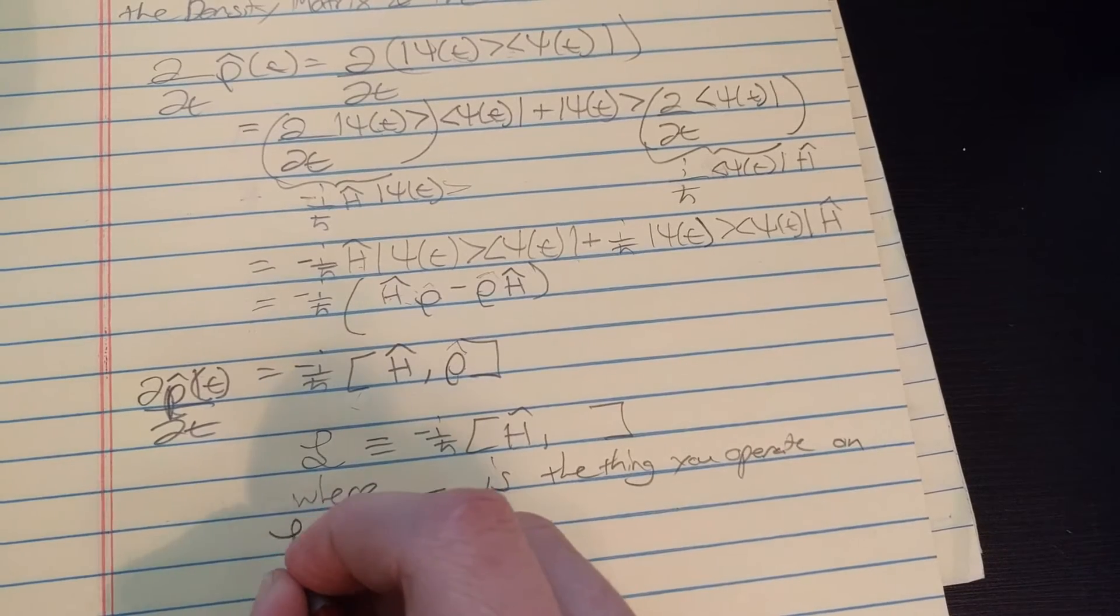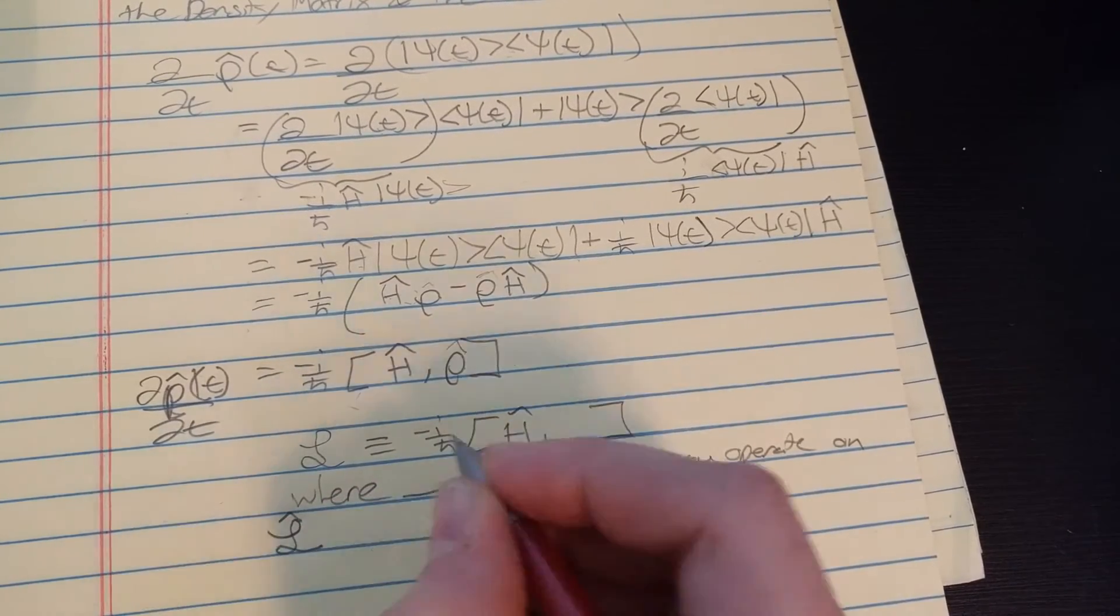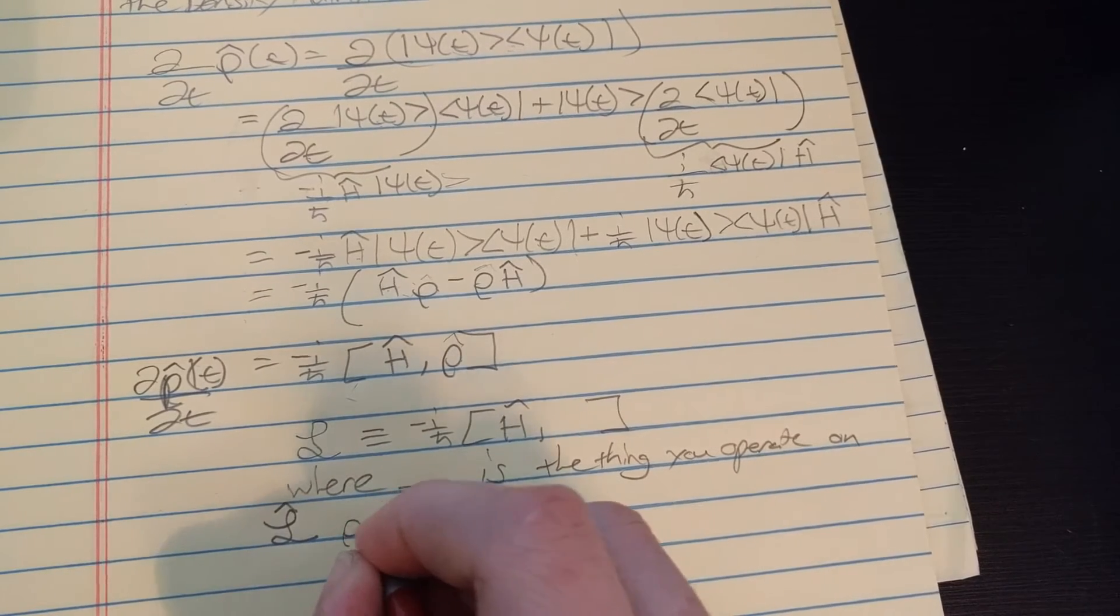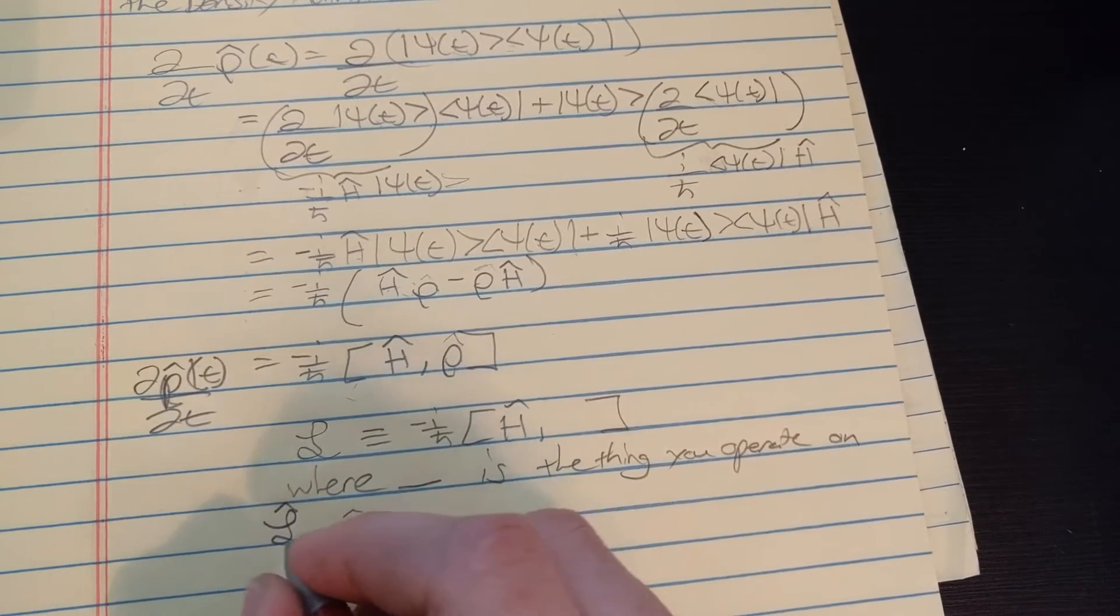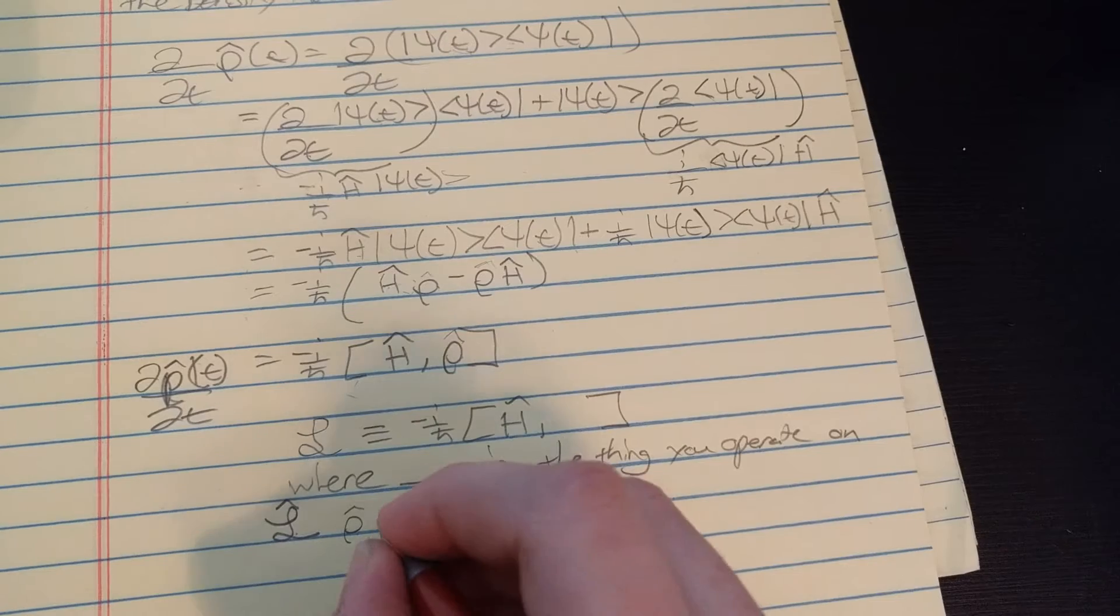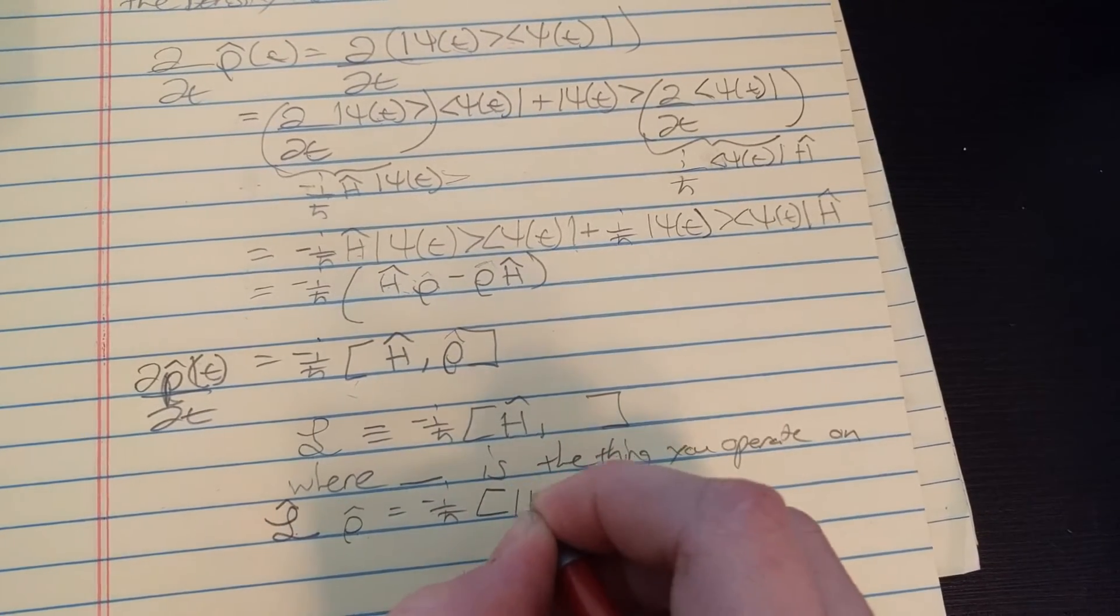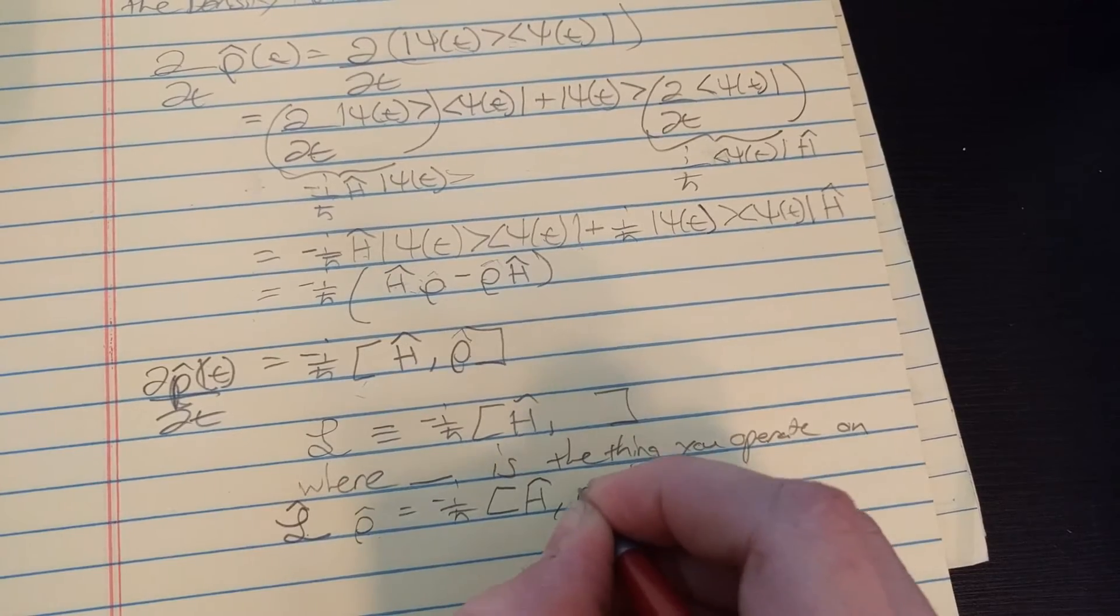For instance, the Liouville operator times the density matrix, or the Liouville operator operating on the density matrix, is equal to negative i over h-bar H times rho.